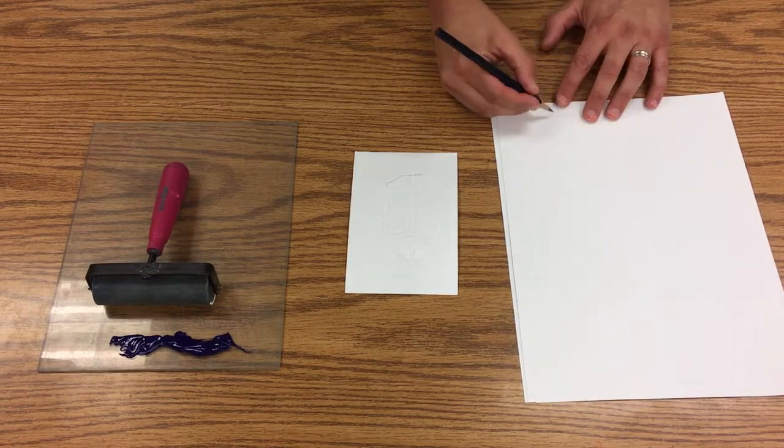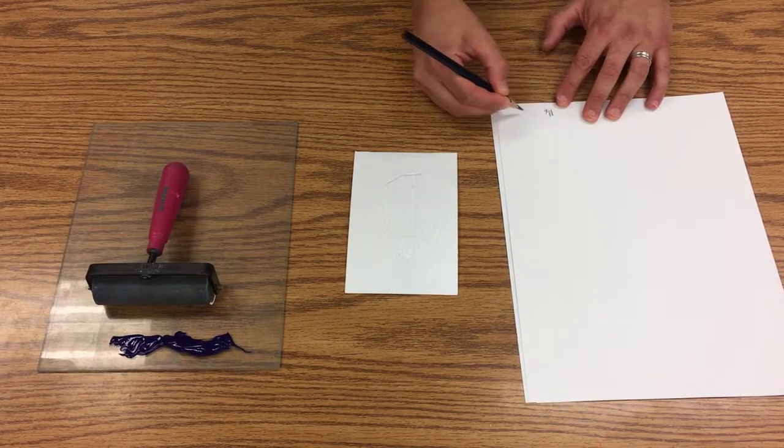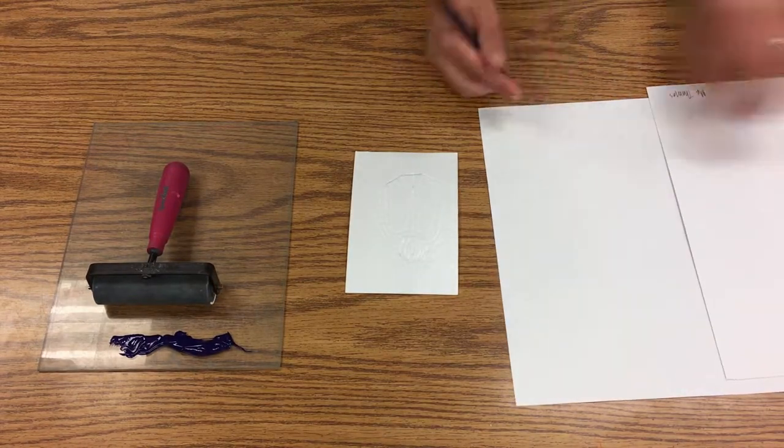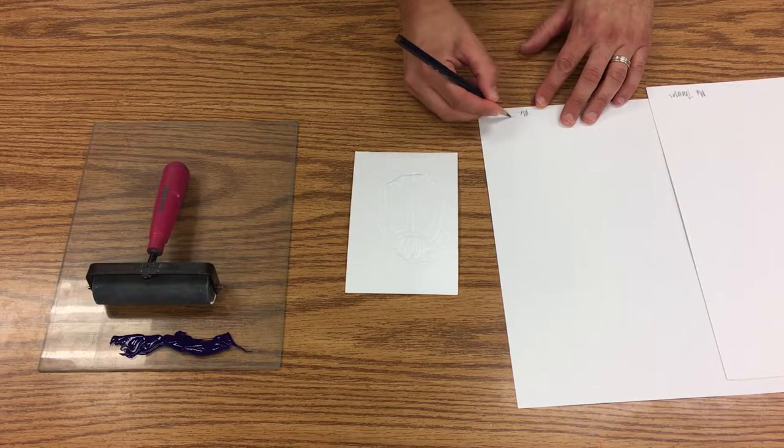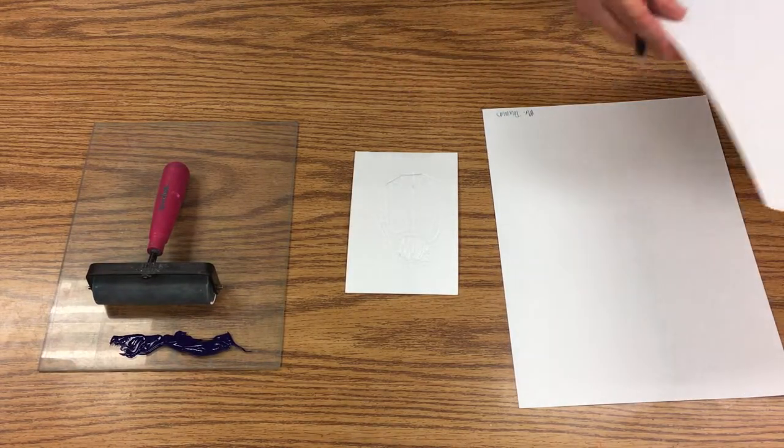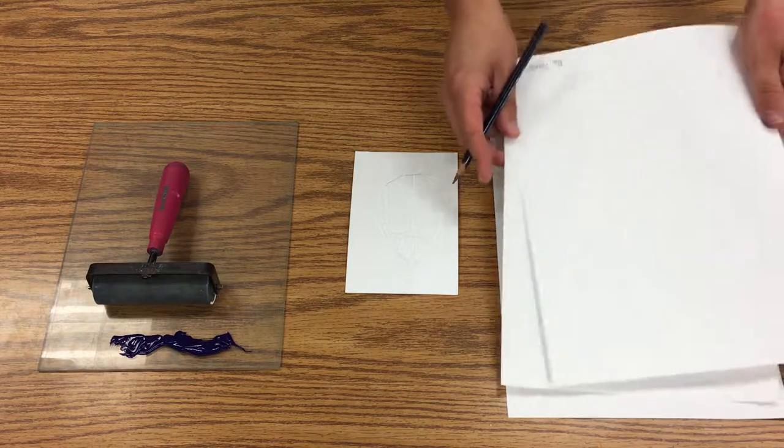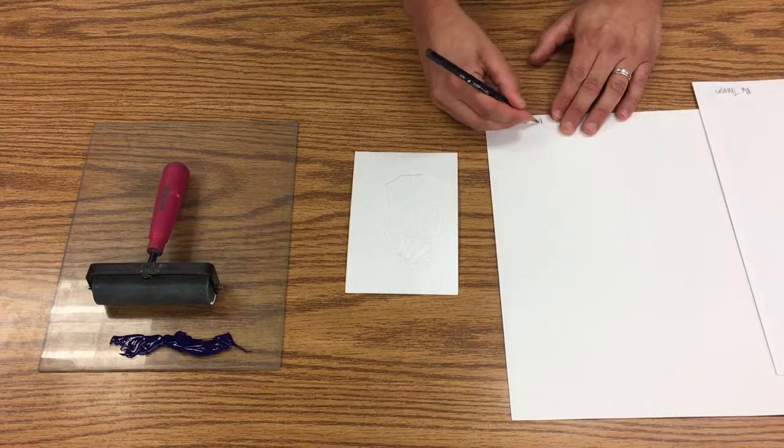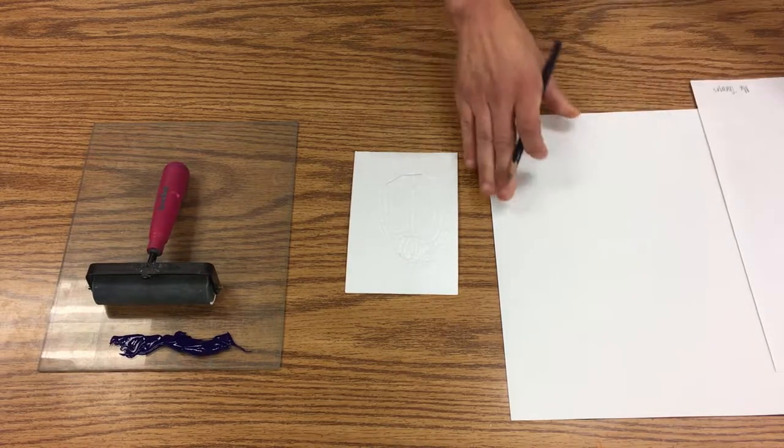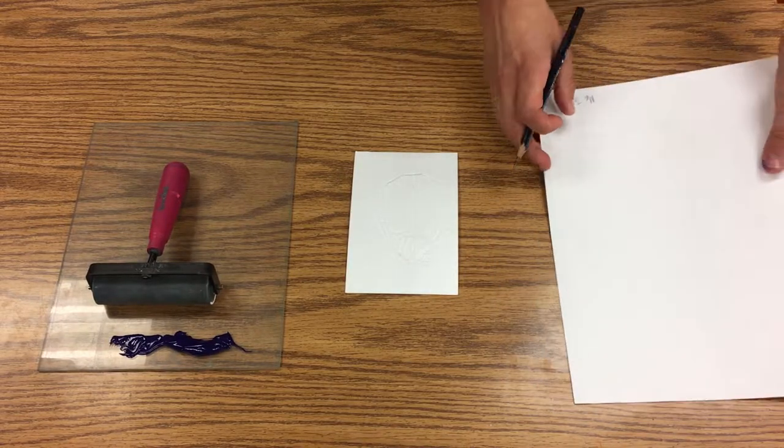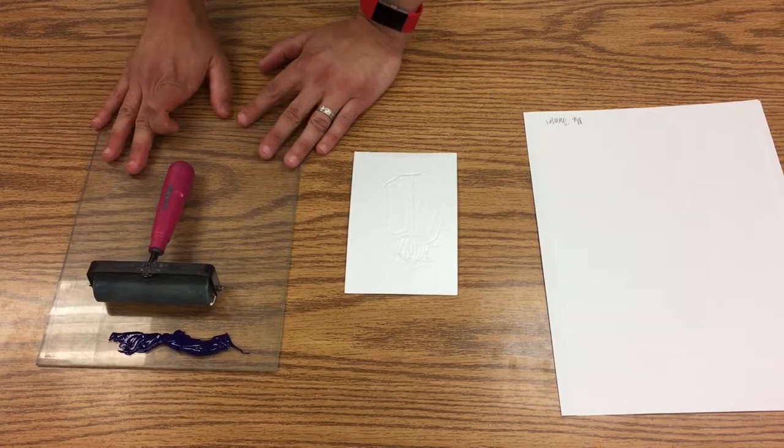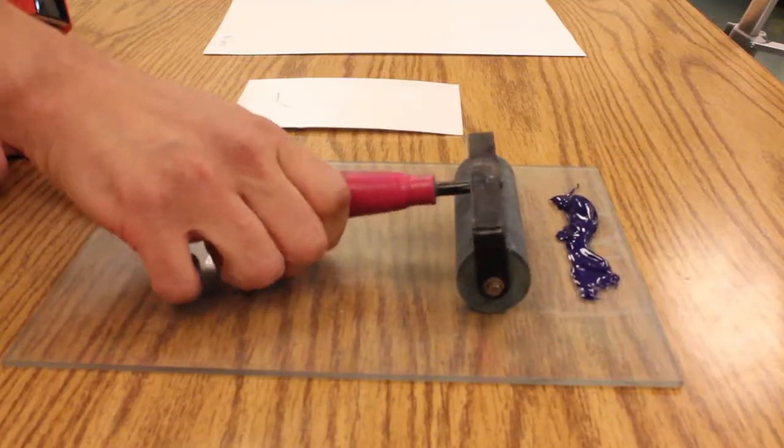Start by writing your name on three sheets of paper. Then what I'm going to do is get the ink ready. I don't want the ink over the entire sheet of plexiglass, so what I'm going to do is roll this out evenly. All this ink won't be needed for the first print.